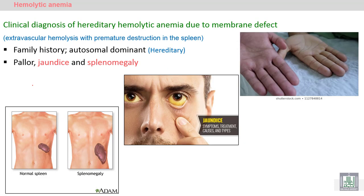This type of Hemolytic Anemia is characterized by Extravascular hemolysis — destruction of the abnormal Red Blood Cells in the Spleen — leading to Splenomegaly.